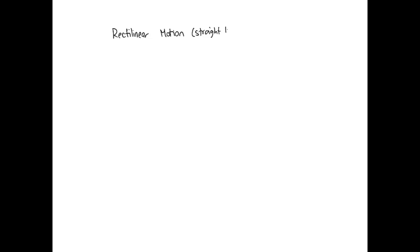Rectilinear motion is a special case of motion where you're only moving in a straight line. We like to separate this from curvilinear motion because we can simplify our equations. If you have rectilinear motion, it means if you set an origin here, your particle can only move in one direction. So let's say after a certain amount of time your particle is here at P1, and after some more time it would be here at P2. Let's call this the x direction.